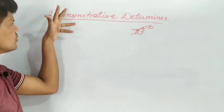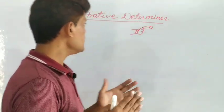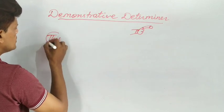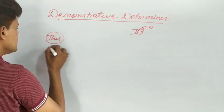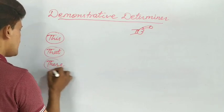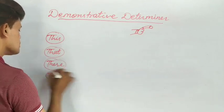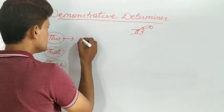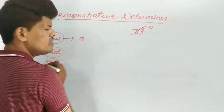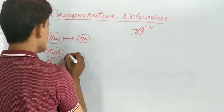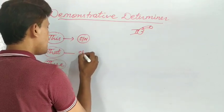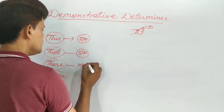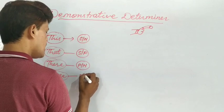In English language there are four demonstrative determiners. The first one is 'this', second one is 'that', third one is 'these', and fourth is 'those'. 'This' represents a singular subject for near. 'That' is singular and for far. 'These' is plural and for near. 'Those' is plural and for far.